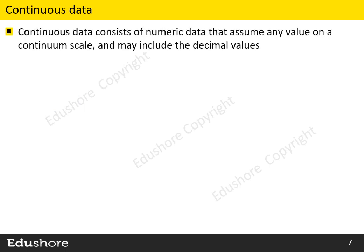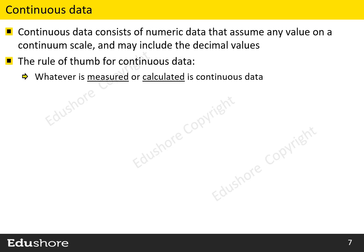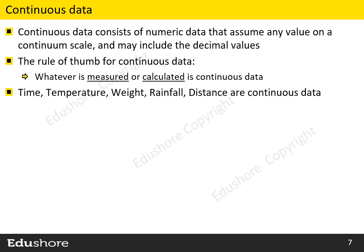Now let's look at the continuous or variable data. Continuous data consists of numeric data that assumes any value on a continuum scale and may include decimal values. The rule of thumb for continuous data is: whatever is measured or calculated is continuous data. Data of time, temperature, weight, rainfall, and distance are all continuous data.